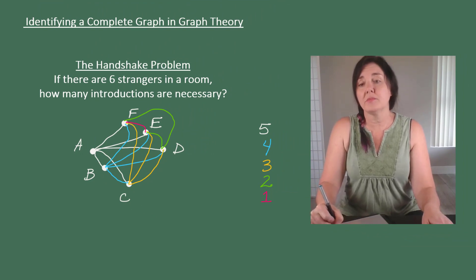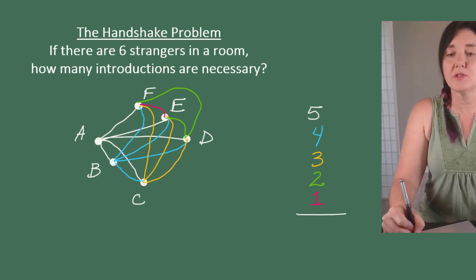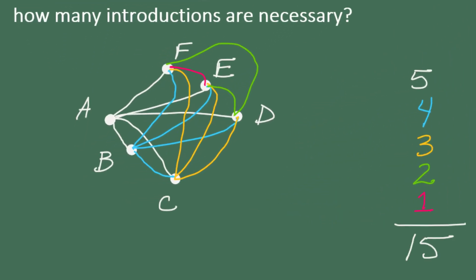So the total number of introductions is going to be five plus four is nine plus three is 12 plus two is 14 plus one is 15 introductions.